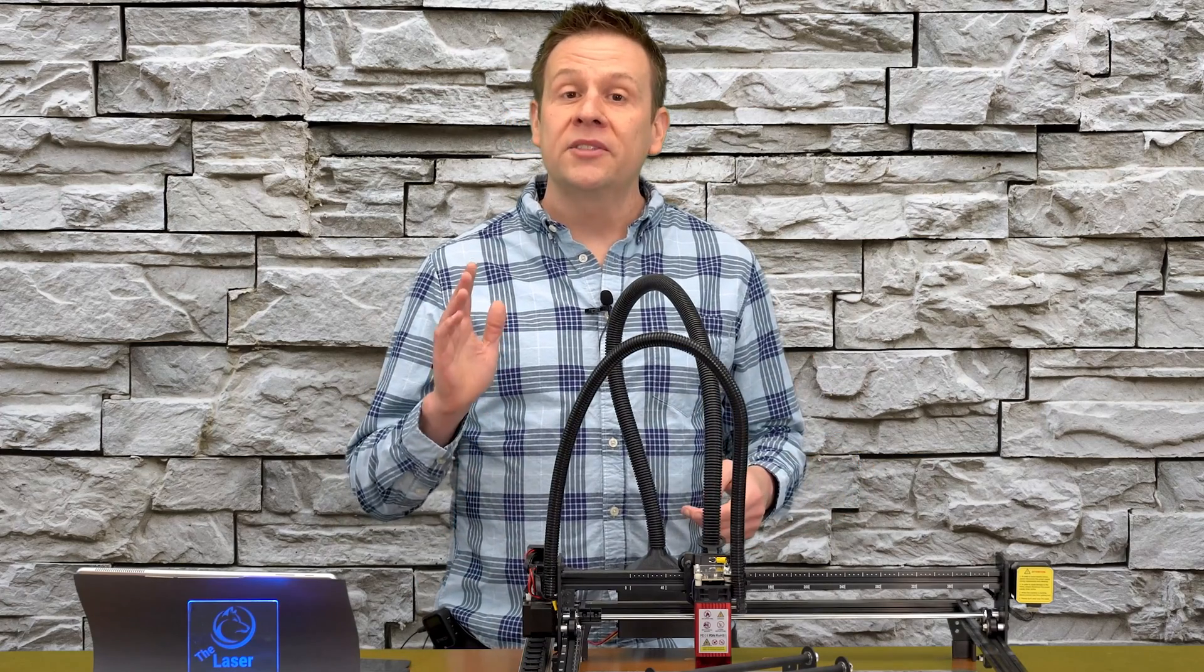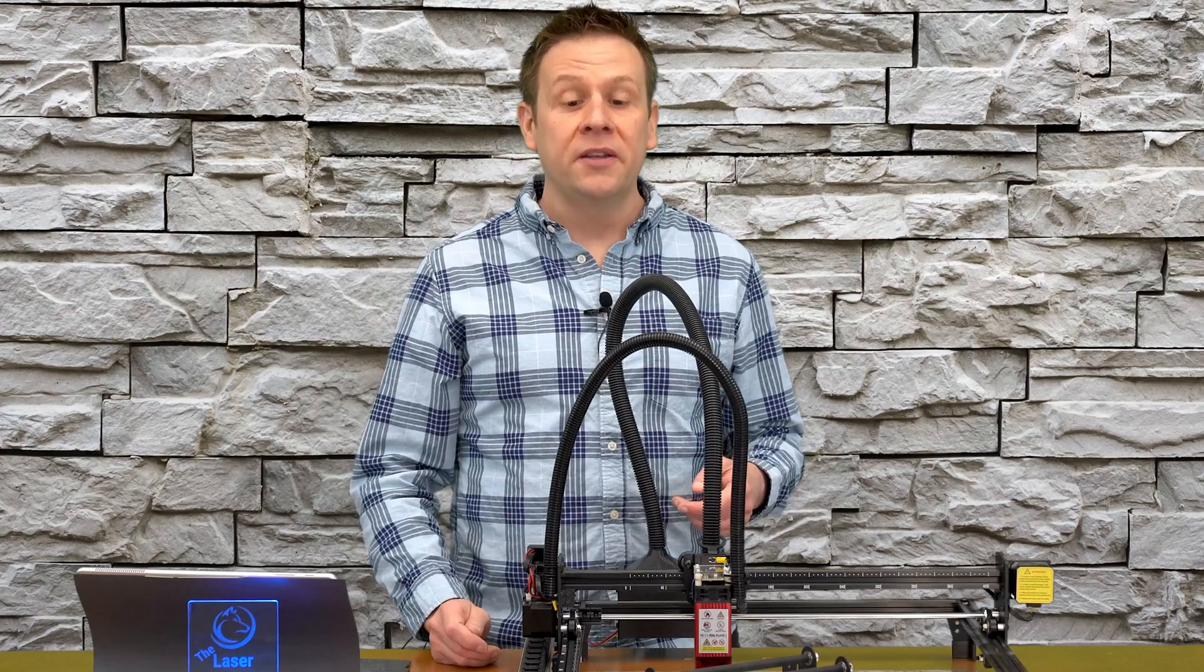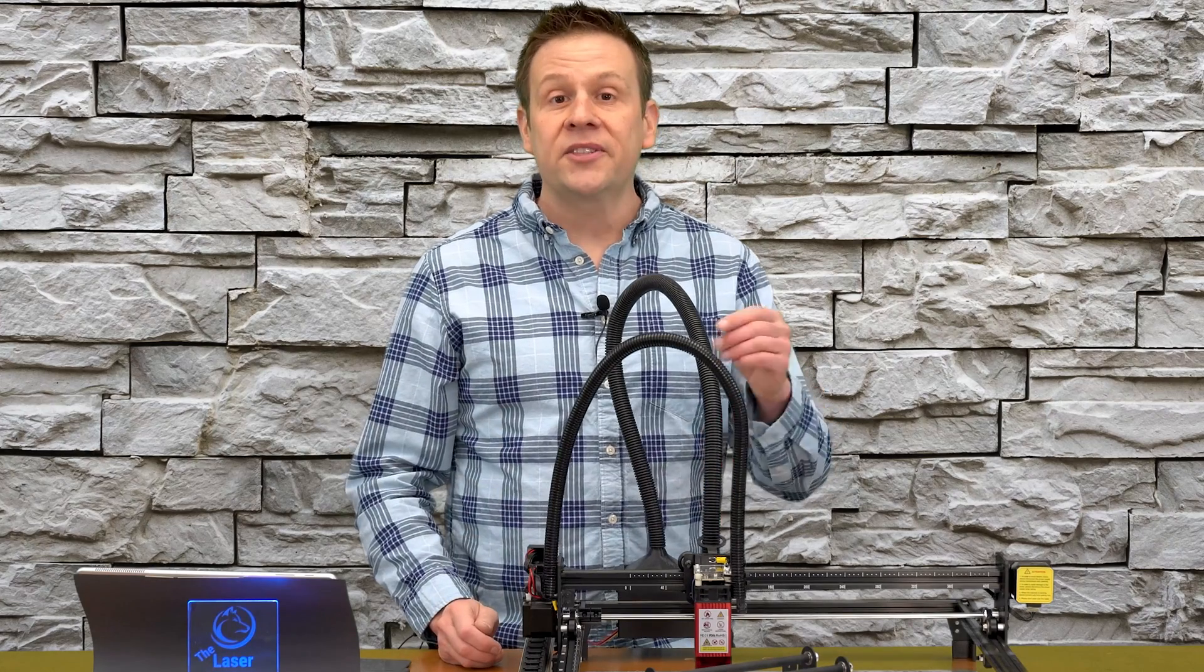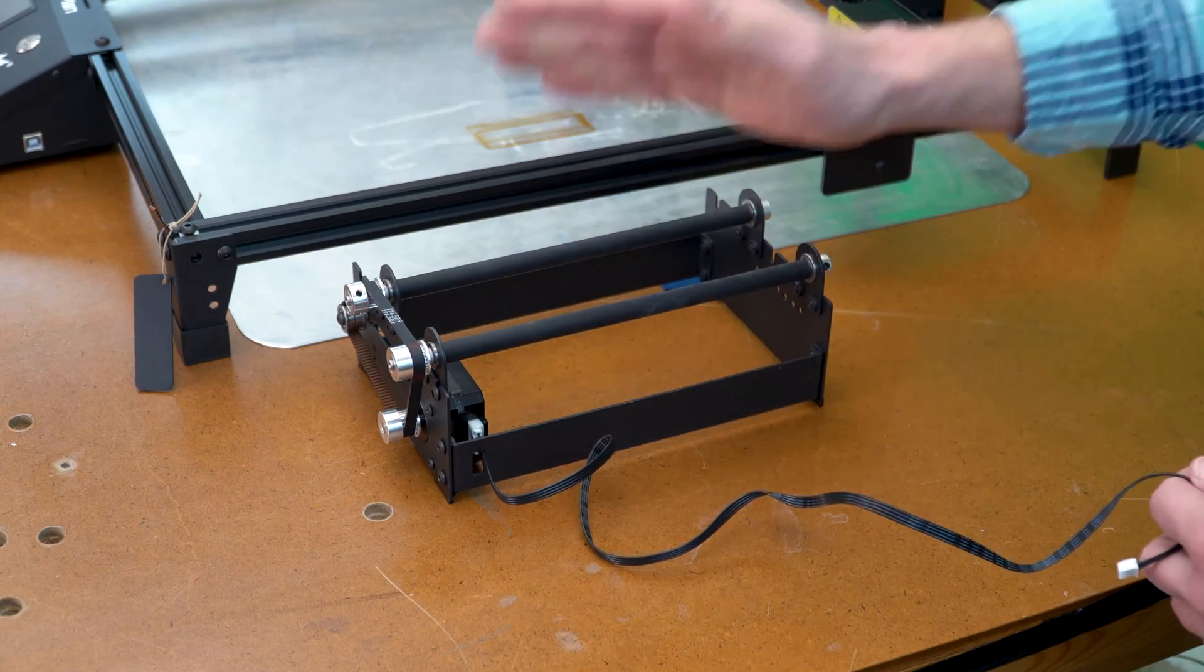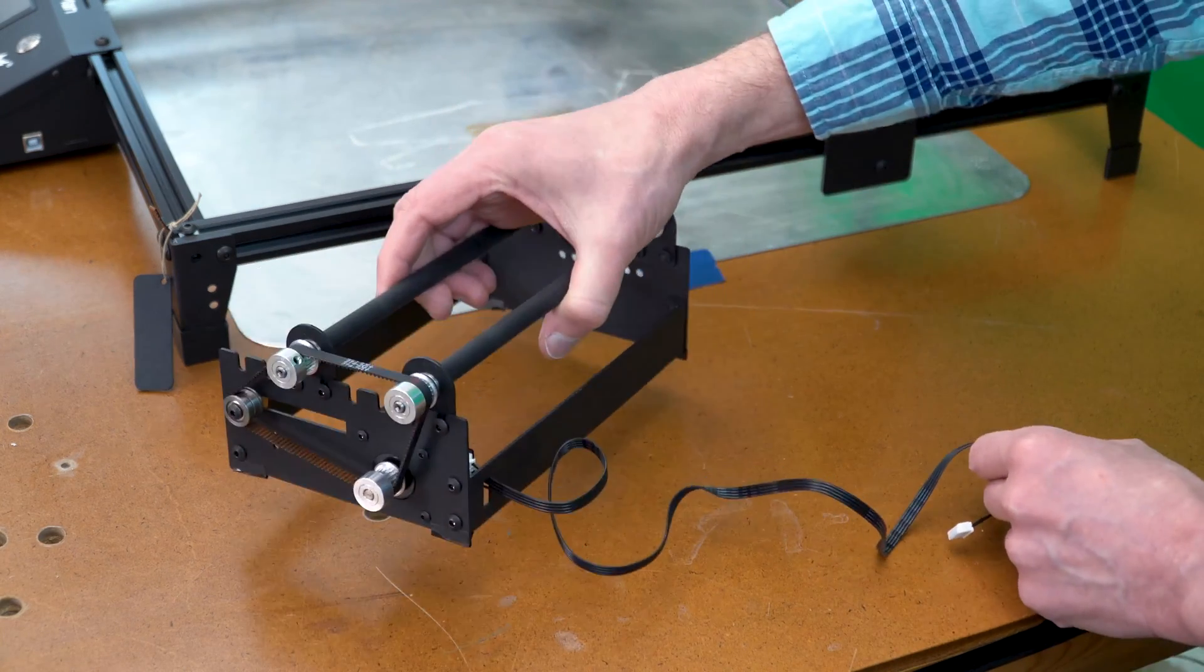To get started, there's going to be just a handful of items that we'll need to set up the machine. Let's take a look at those right now. To get started, we'll need the rotary attachment that's already assembled. This is what it looks like.